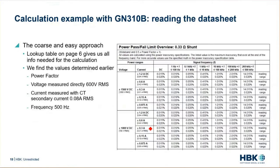Let's get to reading the GM310B data sheet. First, the coarse and easy approach: looking at the table on page 6, which gives us a lookup table with all the info we need for our calculation. We need to find the values we determined earlier. The power factor is 0.8, which fits the range between 0.5 and 1. The voltage we are measuring directly at the input is 600 volts RMS, so we are in that input range.